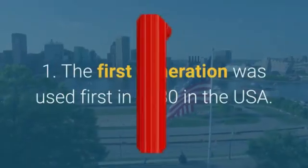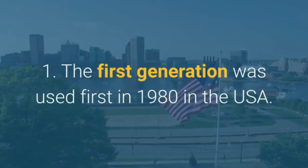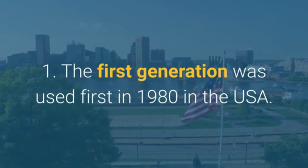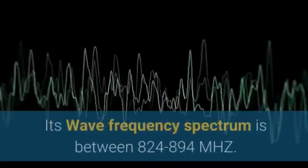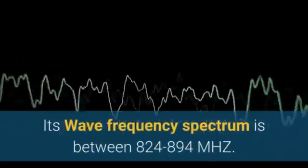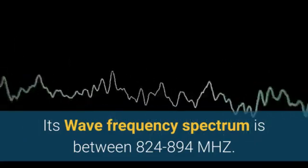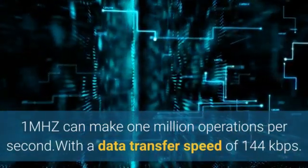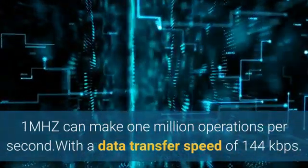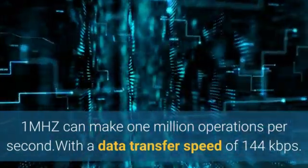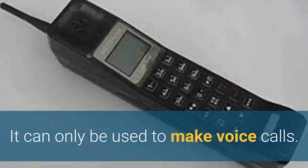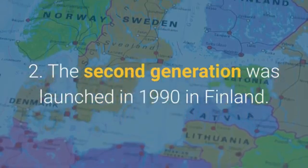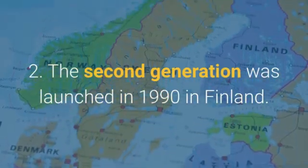The first generation was used first in 1980 in the USA. Its wave frequency spectrum is between 824 to 894 MHz. One MHz can make one million operations per second, with a data transfer speed of 144 kilobits per second. It can only be used to make voice calls.